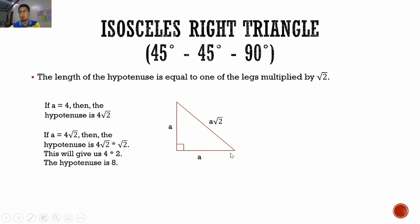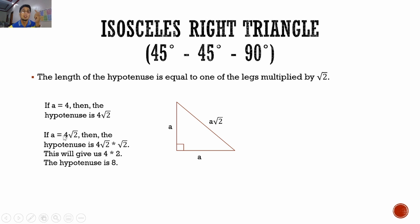If A equals 4√2, then the hypotenuse is 4√2 multiplied by √2, which gives us √2 times √2 equals 2, so the hypotenuse is 4 times 2 equals 8. The technique: when one of the legs is a whole number, the hypotenuse has a square root of 2. When the leg already has a square root of 2, multiply the whole number by the number inside the radical to get the hypotenuse.